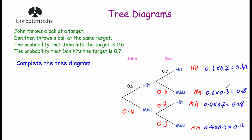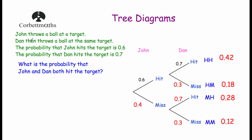Let's look at some questions on the tree diagram. The first question asks: what is the probability that John and Dan both hit the target? That is our hit-hit outcome, which is 0.42. So the probability of John hitting the target and Dan hitting the target is 0.42.